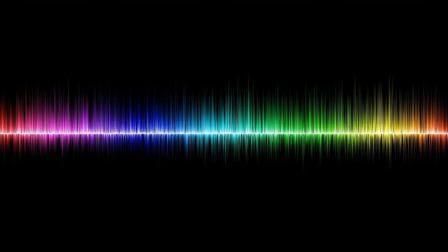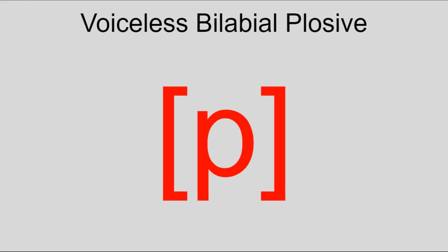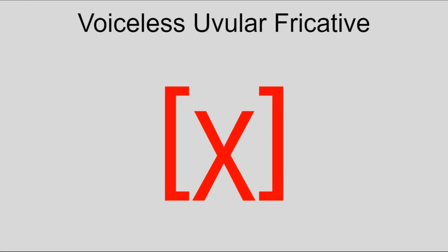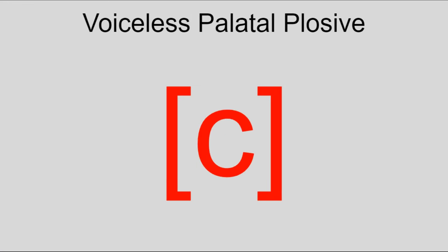Hear the difference between S and Z. Other such examples are P and B, CH and J, and K and G.